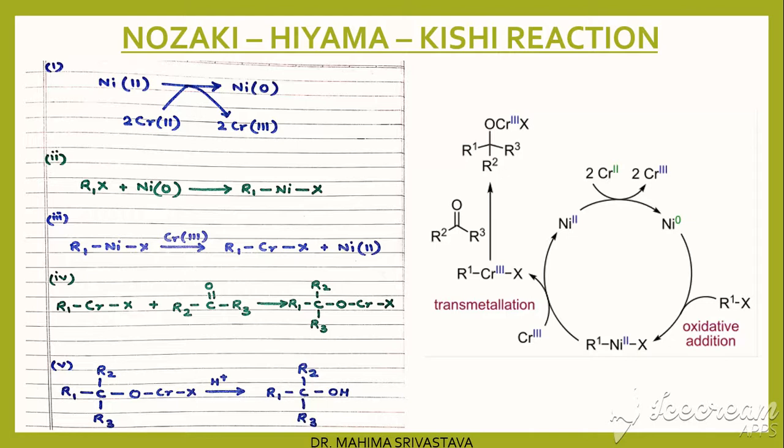doping chromium chloride with catalytic amounts of nickel or manganese gives very good results. The driving force for these reactions is the formation of a highly stable oxygen-chromium bond in which chromium is in oxidation state 3.